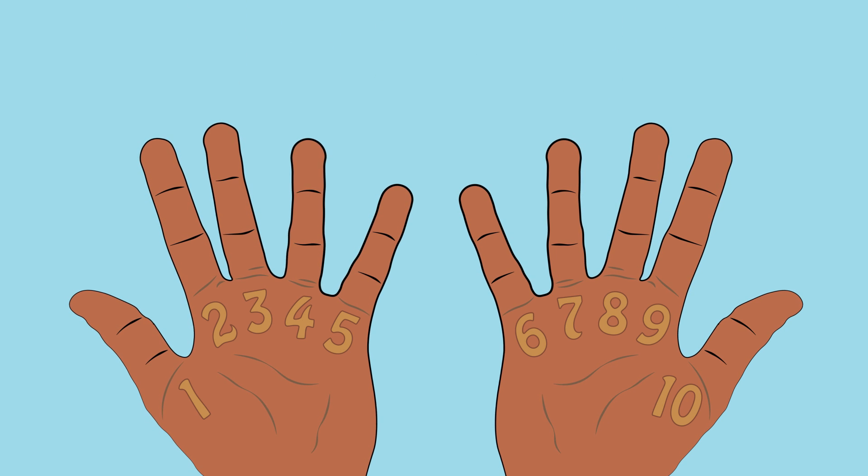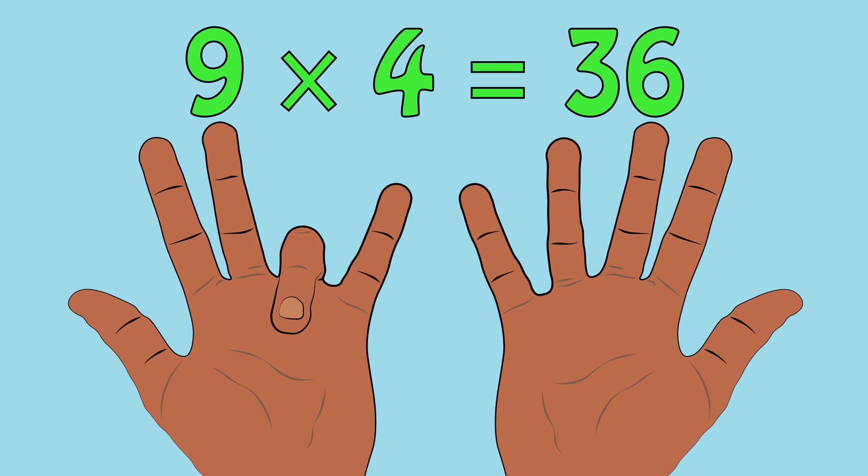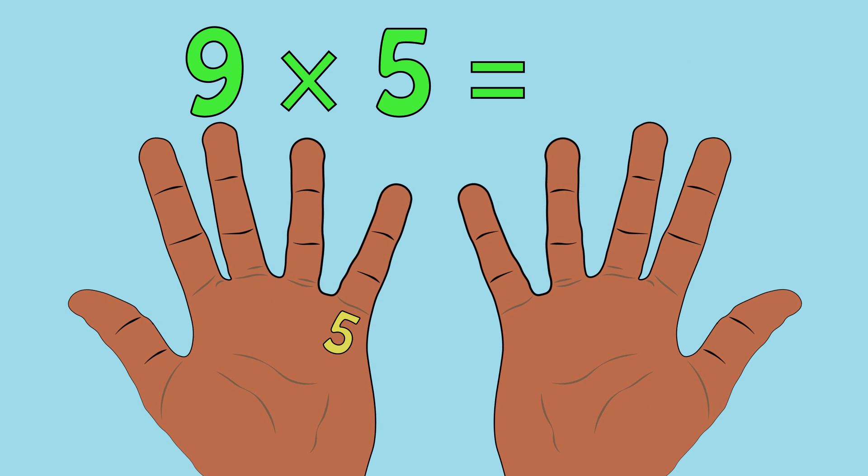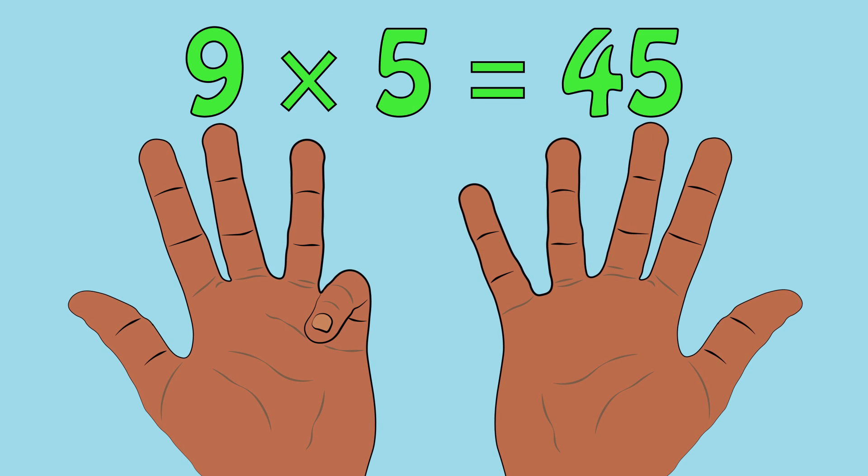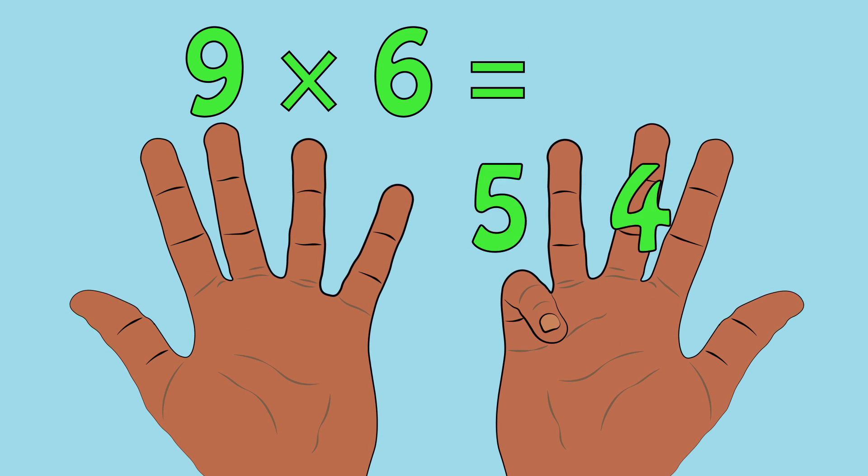Starting to get the hang of it now. 9 times 4 equals 36. 9 times 5 equals 45. 9 times 6 equals 54.